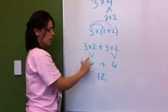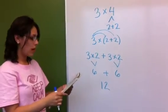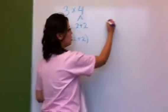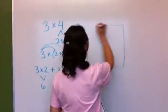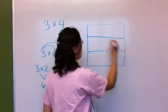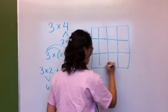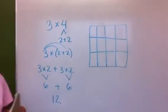12 is your answer for 3 times 4. If you wanted to show that with a picture, you could have your picture, assuming these are evenly cut pieces.